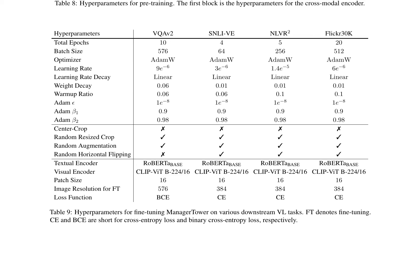The weight decay, warm-up ratio, and Adam optimizer's hyperparameters are also task-dependent. The center crop augmentation is disabled during fine-tuning, while random resized crop, random augmentation, and random horizontal flipping are enabled for all tasks. The textual and visual encoders remain the same as in pre-training, with image resolution for fine-tuning set to 576, 384, 384, and 384 for VQA-V2, SNLI-VE, NLVR2, and Flickr 30K, respectively. The loss function used is either binary cross-entropy or cross-entropy, depending on the task.